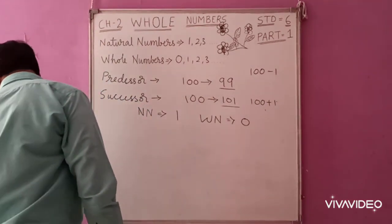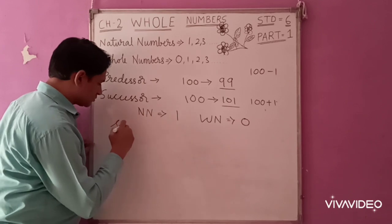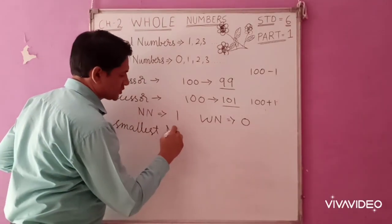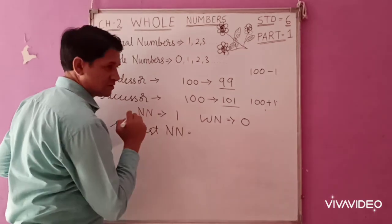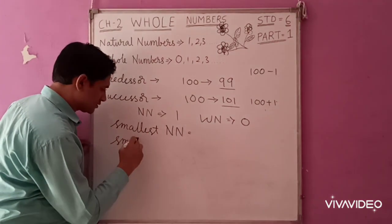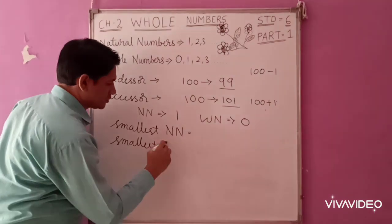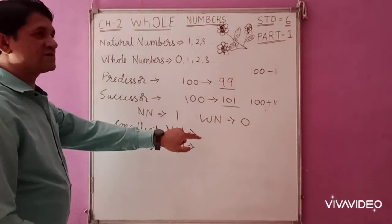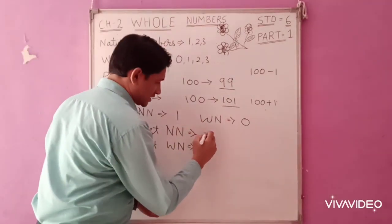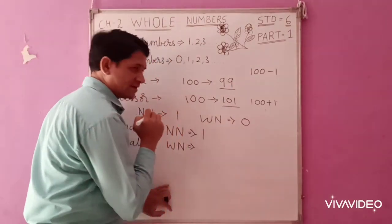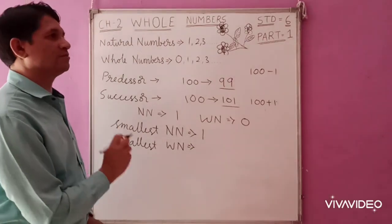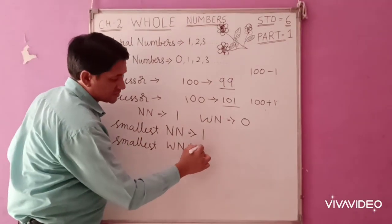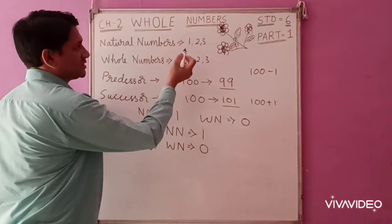Now, what is the smallest natural number and what is the smallest whole number? The smallest natural number is 1. The smallest whole number is 0.